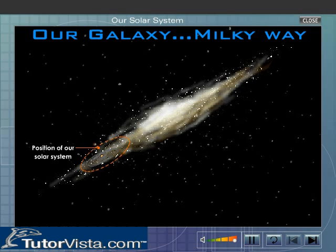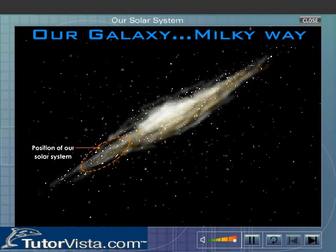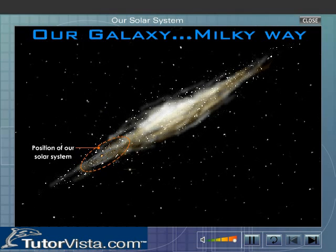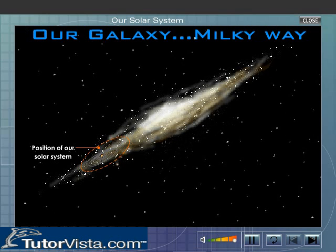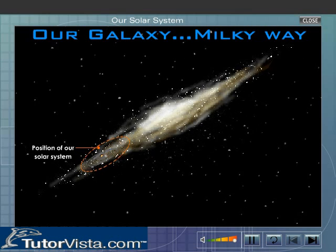This is the Milky Way, our own galaxy. It contains about 200 billion stars and countless other objects.